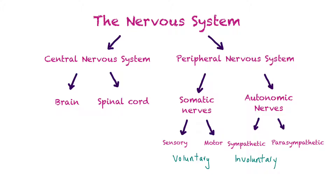The peripheral nervous system is broken down into somatic nerves, which are voluntary and made of skeletal muscle fiber. These are further broken down into sensory nerves that collect information from our surroundings, and motor nerves that bring information from the central nervous system back to muscles and tell them to contract.